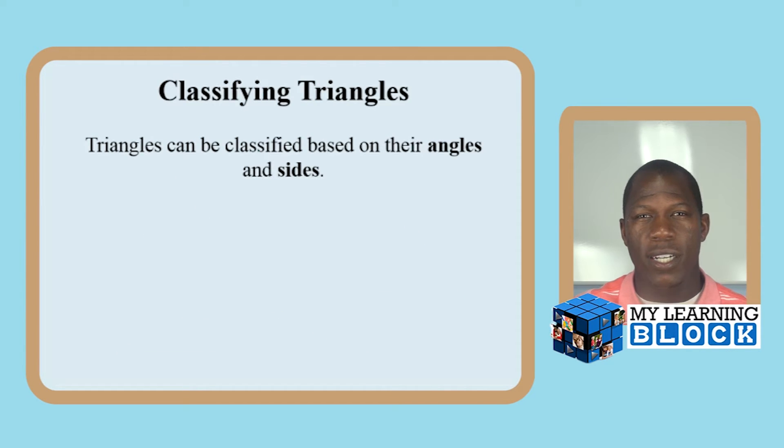When we're classifying triangles, what you want to let your child understand is that we classify triangles based on two properties: their sides and their angles. Today we're going to work on classifying triangles based on their angles, so without further ado, a right triangle.